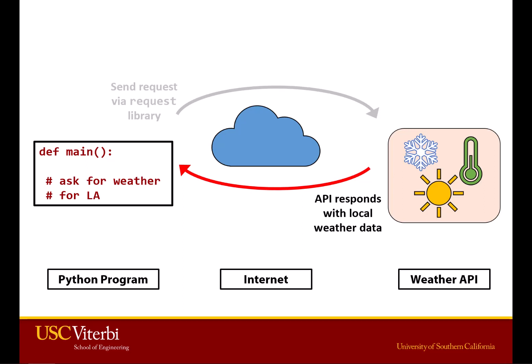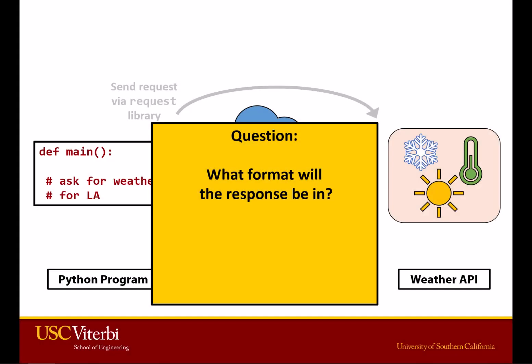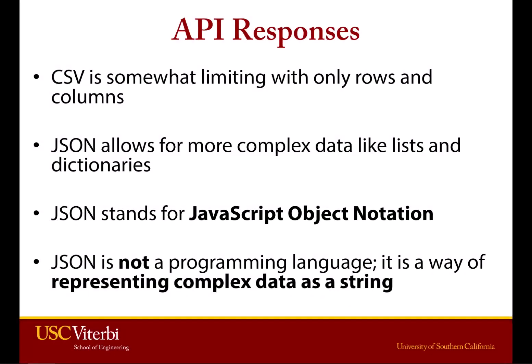It's a fairly simple process and the code is straightforward. But the question is: what is the form of the response? How does that information come back to you? If it's just the temperature, maybe it's just an integer. But if it's a lot of data — temperature, humidity, next week's forecast — often the form it comes in is what we call JSON. If you think about CSV, which we've talked about, a CSV file has limitations because it's basically a giant table with rows and columns. JSON lets us store more complicated data, like lists and dictionaries, in a simple text file — that's what makes it more powerful than a CSV file.